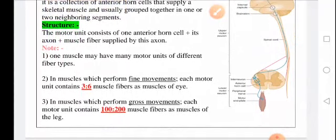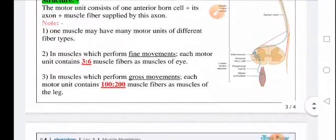These are important notes. One muscle may have many motor units of different fiber types. In muscles that perform fine movements, which do not require a lot of energy, such as the muscles in my eye, each motor unit just contains three to six muscle fibers.